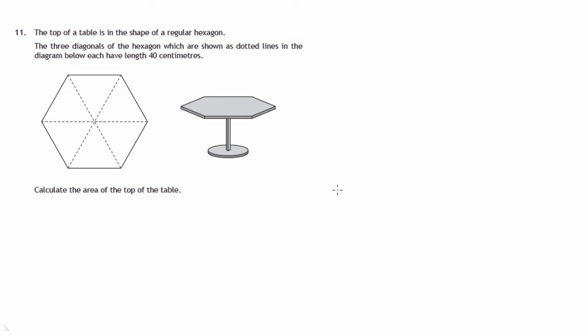This is question 11 from paper 2 of the 2015 National 5 SQA Maths exam. We're given a tabletop in the shape of a hexagon.